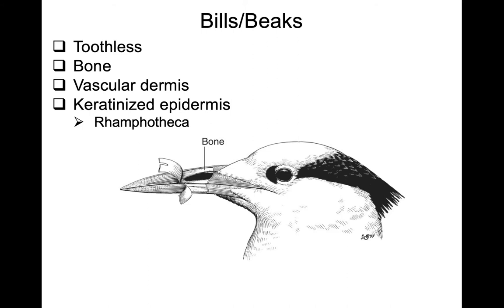As I mentioned previously, birds don't have teeth. Their bills or beaks are toothless. Most of the ornithologists I know of refer to this structure as the bill, but you can use either one. There is a solid bony support both in the upper bill and the lower bill. Overlying this is a vascular dermis that supports and produces an epidermis that becomes keratinized, producing this tough, horny layer called the rhamphotheca.